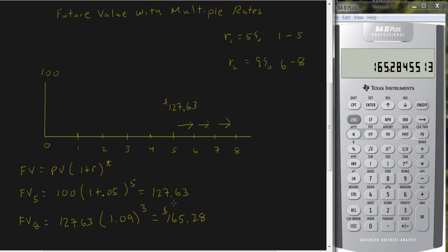But the easiest way to think of it is treat it as two separate problems. Take this $100, find the future value in year 5, now treat this 127.63 as a lump sum, and find the future value in year 8.